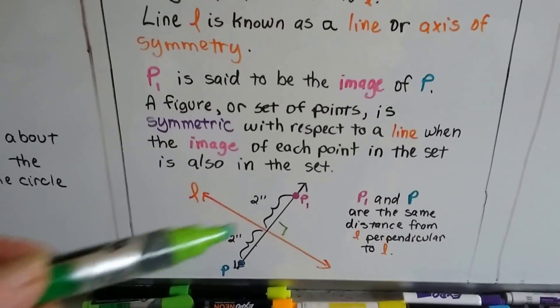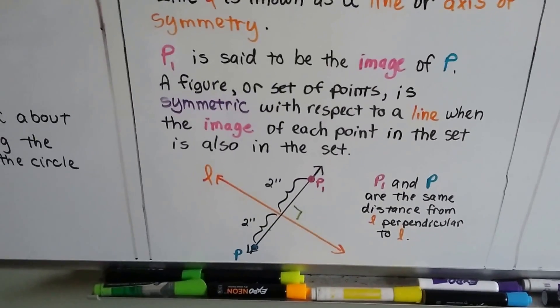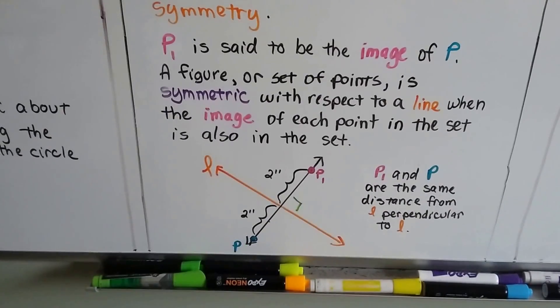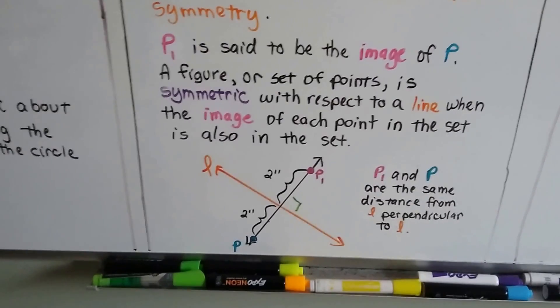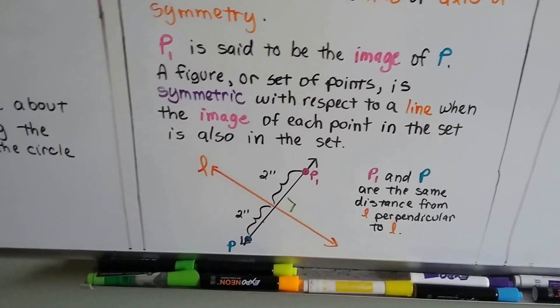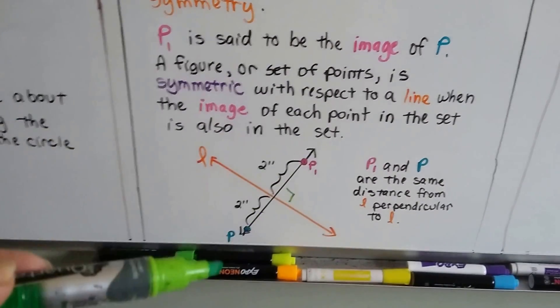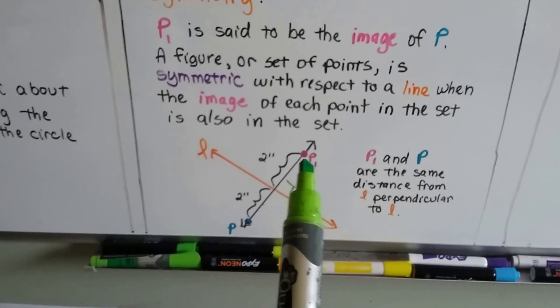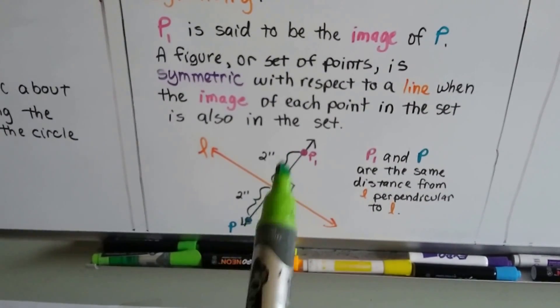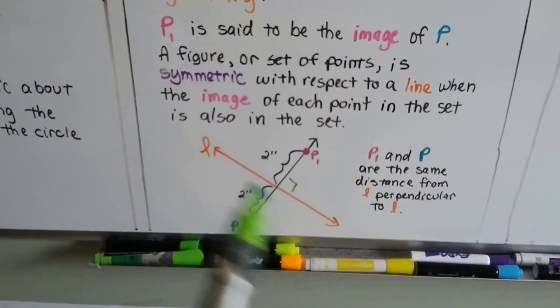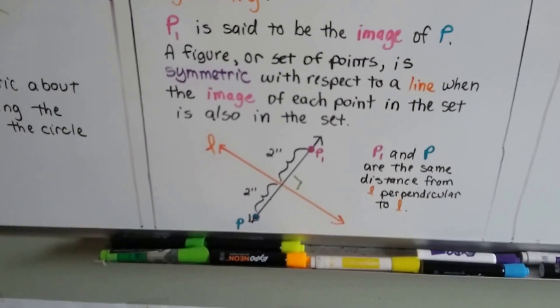And p sub 1, this pink one right here, is said to be the image of p down here. A figure or set of points is symmetric with respect to a line when the image of each point in the set is also in the set. So, p sub 1 and p are the same distance from L, and it's perpendicular to L, isn't it?